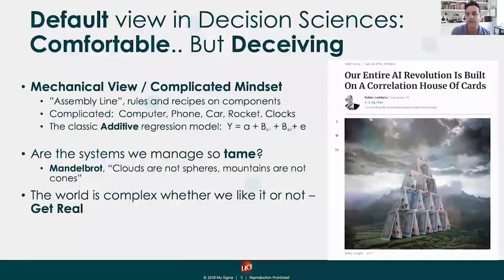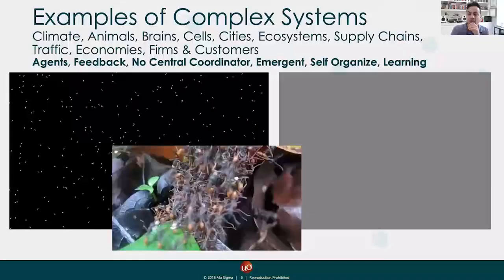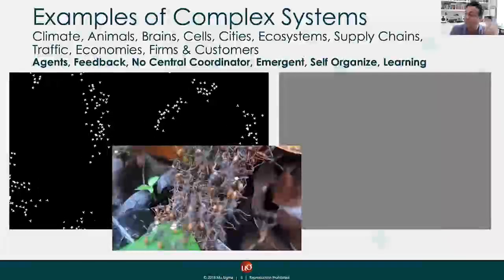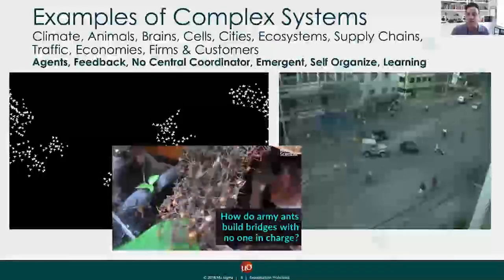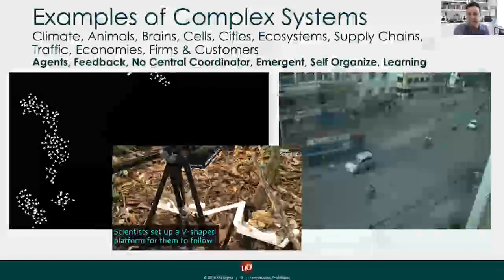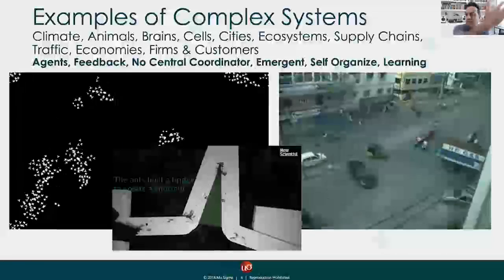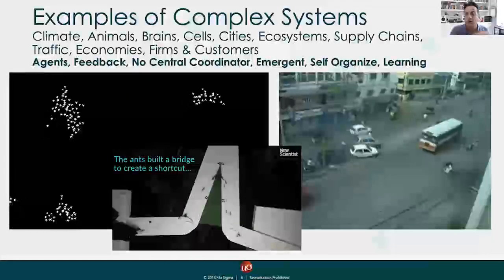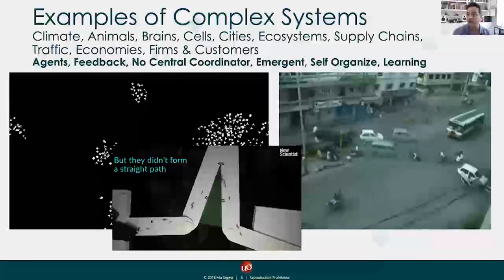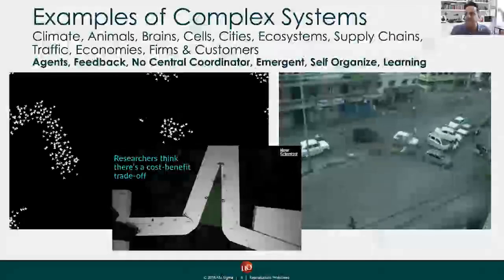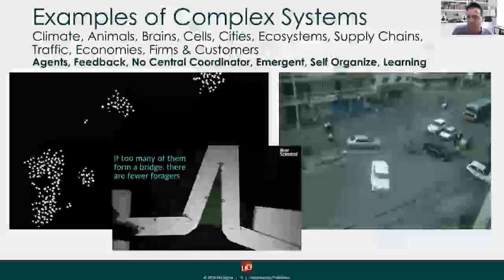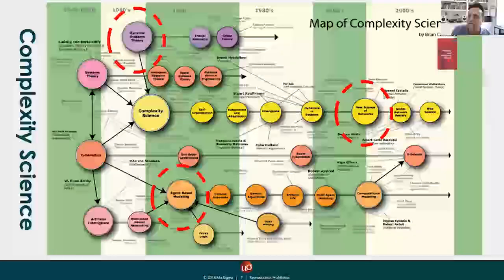Let me define complex systems. I feel most of the systems we work with are most likely complex systems, and understanding that really changes your mindset on the types of techniques you should be using. Complex systems are active — they're everywhere. We see them in traffic, in ants self-organizing and making bridges, in birds flocking. There's an agent, there's feedback, there's no central coordinator. A lot of the interventions we're doing in prescriptive analytics — dealing with supply chains and customer behavior — you're actually working in a complex system.